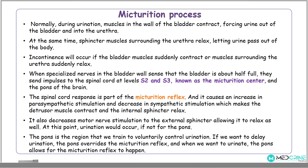The spinal cord response is part of the micturition reflex, which causes an increase in parasympathetic stimulation and a decrease in sympathetic stimulation, making the detrusor — the bladder muscles — contract and the internal sphincter to relax. It also decreases motor stimulation to the external urethral sphincter, allowing it to relax as well. Urination would occur at this point if not for the pons, a region in the brain that we train to voluntarily control urination. To delay urination, the pons overrides the micturition reflex from the spinal cord. When we want to urinate, the pons allows the micturition reflex to take place.